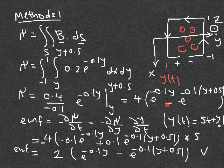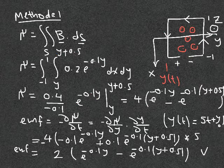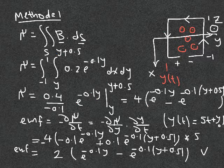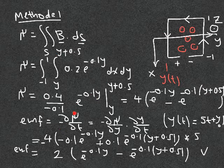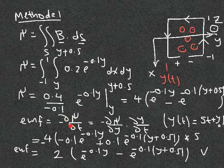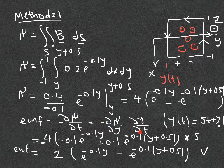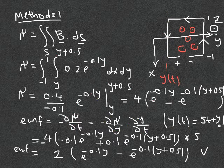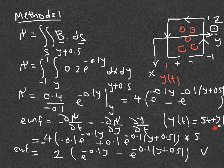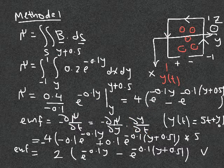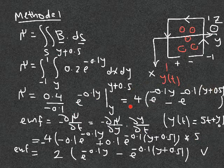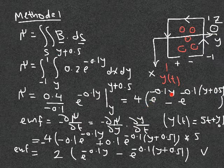The flux derivative is always negative because as the loop moves in the y direction it passes through weaker and weaker field — the flux is still pointing in the z direction out of the page, so psi is positive, but its rate of change is negative. The EMF from Faraday's law is minus the rate of change of flux. Since psi is a function of y and y is a function of t, we apply the chain rule: EMF = minus (d psi/dy)(dy/dt). Taking the partial derivative with respect to y gives minus 0.1 e to the minus 0.1y and plus 0.1 e to the minus 0.1(y plus 0.5).